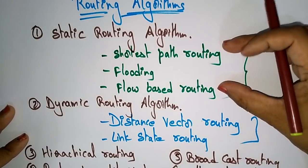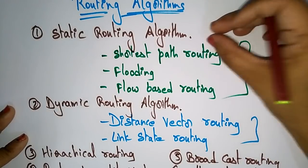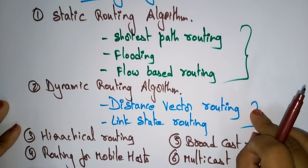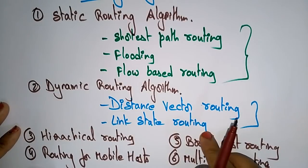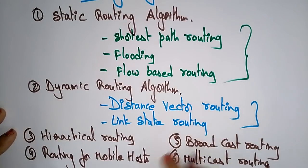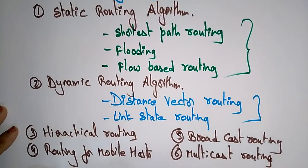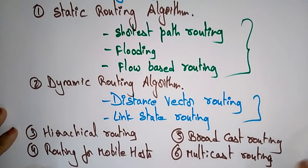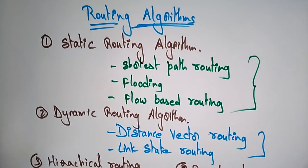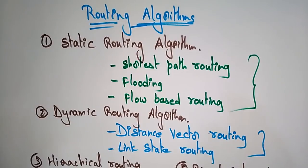So static routing algorithms are shortest path, flooding, and flow-based. Dynamic routing algorithms are distance vector routing, link state, hierarchical routing, routing for mobile hosts, broadcast, and multicast. These are all the different routing algorithms. In the coming videos I'll explain each and every routing algorithm with an example. Thank you.